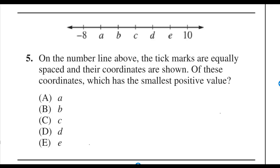On the number line above, the tick marks are equally spaced and their coordinates are shown. Of these coordinates, which has the smallest positive value?